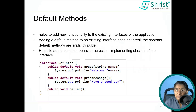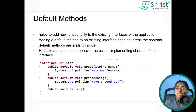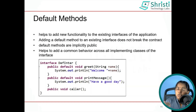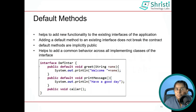So in those scenarios, you needed to extend that interface and add the new method. This new method would also be abstract, so you would need to create a separate implementation class to implement it.